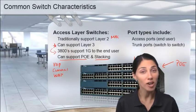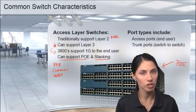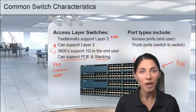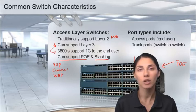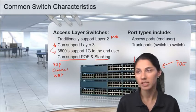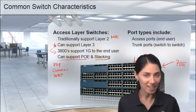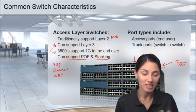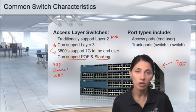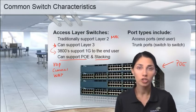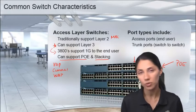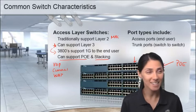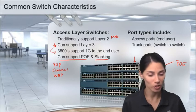Different models are going to have different features and characteristics. Some might have copper 10-gig ports as their uplinks, and some might have fiber ports as their uplinks. When we look at stacking, some might have that dedicated StackWise cable that connects in the back, which gives us faster backplane speeds. There are all sorts of different ways to configure your access layer switches.